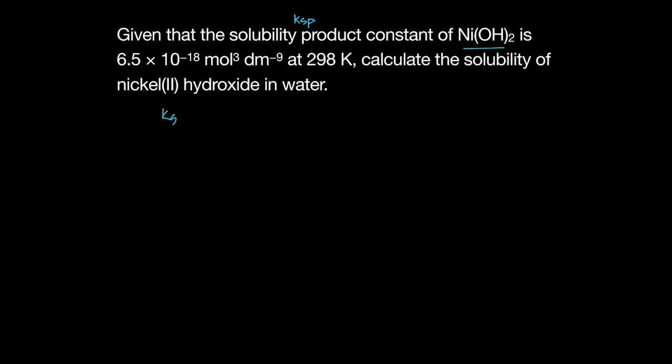They have given the KSP of nickel hydroxide, which is Ni(OH)₂, and that is 6.5 times 10⁻¹⁸. And so nickel hydroxide, you got to write the equation.